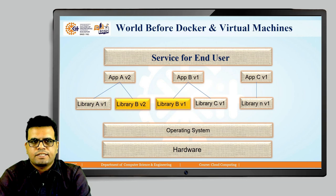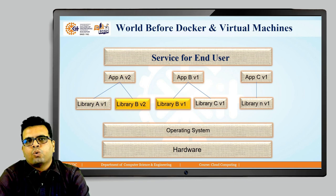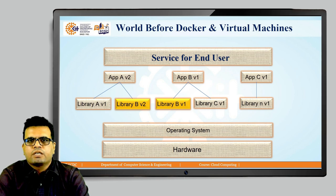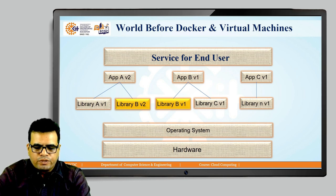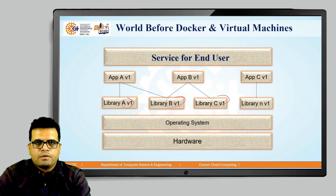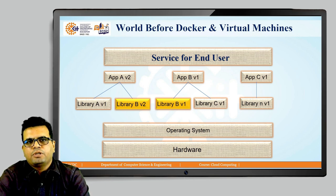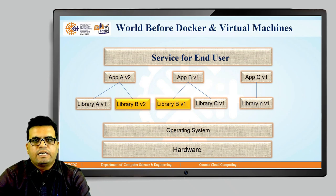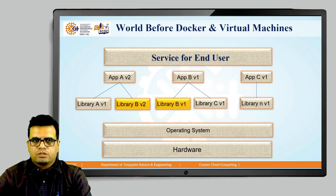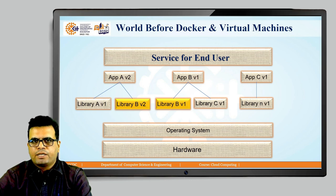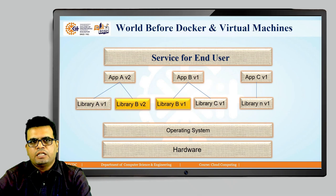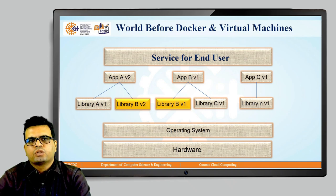You will not be able to deploy both versions of the library at the same time. This creates a dilemma: either you stick with the older version of Application A and its older Library B, forgoing the update, or you have to compromise between Application A and Application B — you can use one or the other, but not both simultaneously. This is the world before containers.